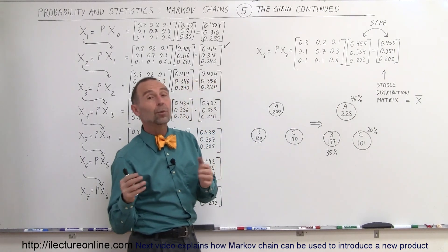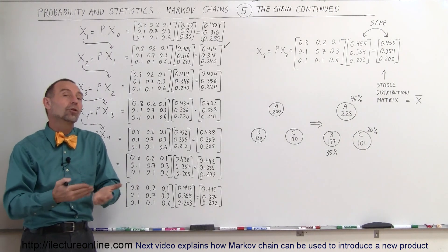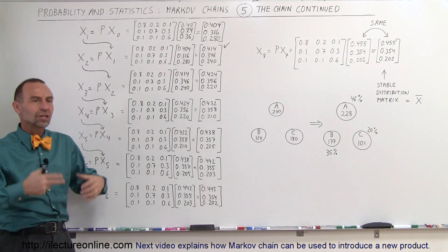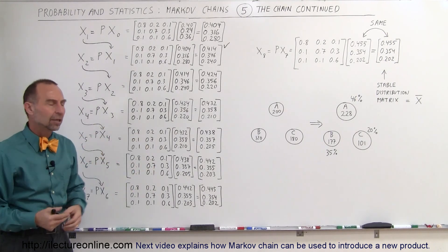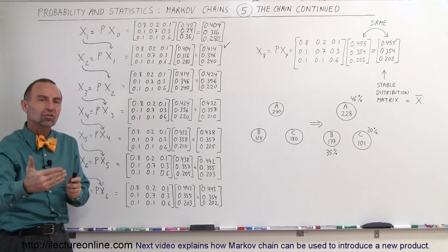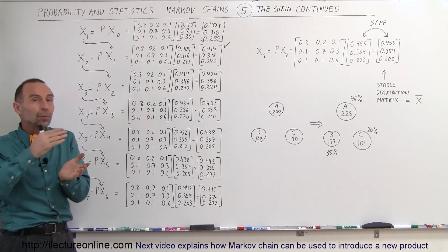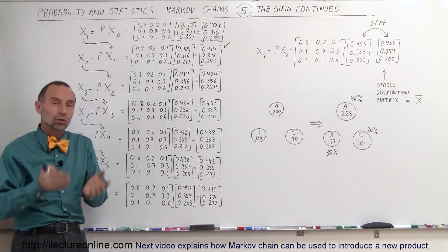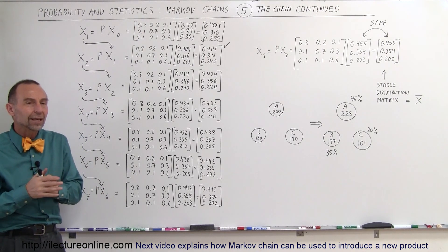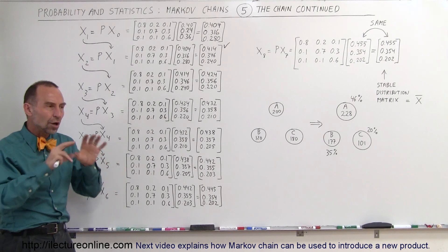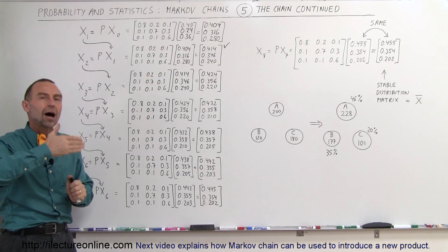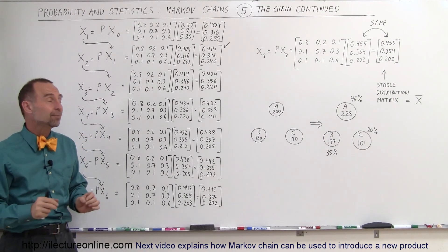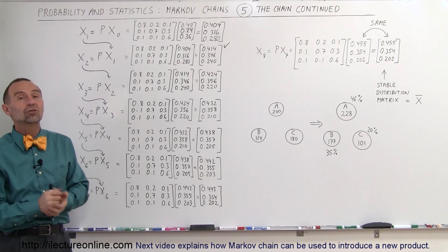This type of system is also used when we add new products to the market — for example, a new toothpaste trying to break in. You do commercials, get the product on shelves in supermarkets and drugstores, and people begin to buy it, giving you an initial state. If it's a good product, people will continue to switch to the new brand; if bad, they may switch back. By polling people and watching behavior, you can build a probability matrix and predict how much of the market your new product will take using Markov chains.